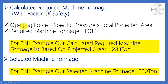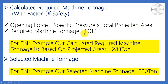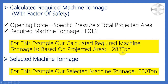For this example we are using 800 kg/cm². To calculate the machine tonnage, we know that the opening force equals specific pressure — which equals our injection pressure — multiplied by the total projected area. We then get the opening force, and to get the required machine tonnage we add a safety factor of 1.2, multiplying the opening force by 1.2. For this example, the calculated required tonnage based on projected area is 283 tons.